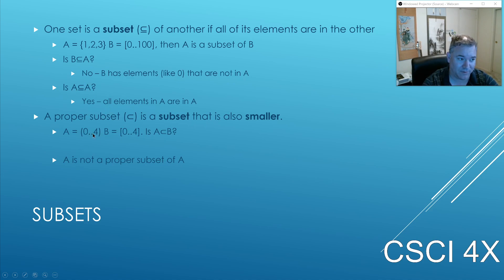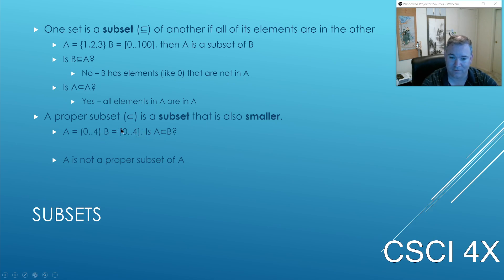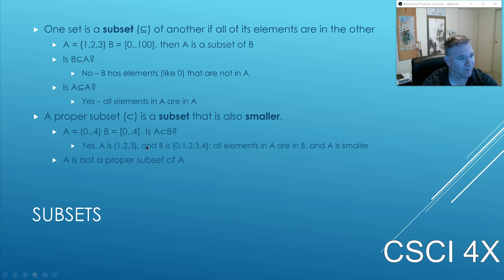A is the numbers from one to three — smooth parentheses. A is not the same as B. B is {0, 1, 2, 3, 4} because square brackets mean inclusive, including zero and four. A is {1, 2, 3} because the parentheses mean not including zero and not including four. So A is a subset of B and also a proper subset of B. A is the numbers from one to three and B is the numbers from zero to four. All elements of A are in B, A is smaller, so A is a proper subset of B.